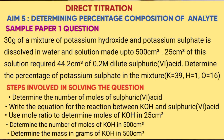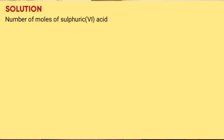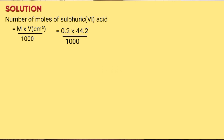The solution to the question: Number of moles of sulphuric acid = MV over 1000, which is 0.2 times 4.2 over 1000. That gives you 0.00884 moles.